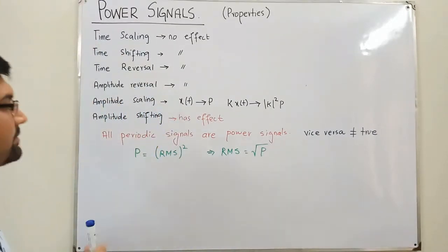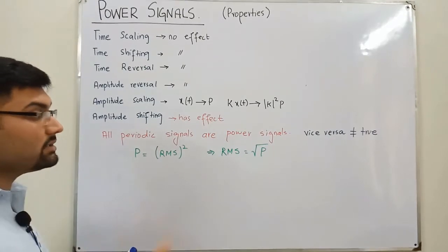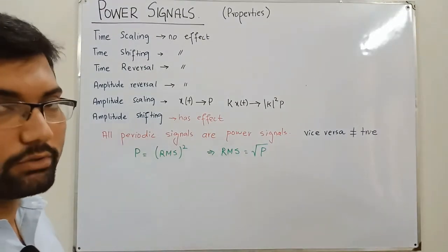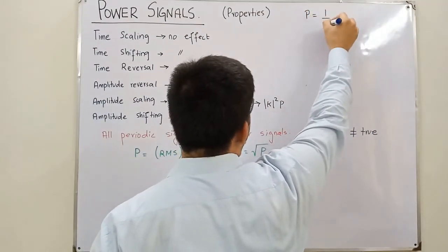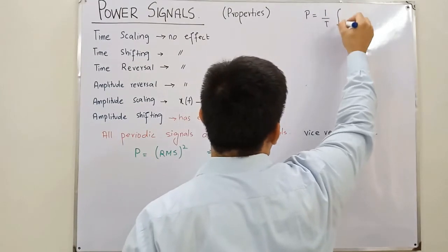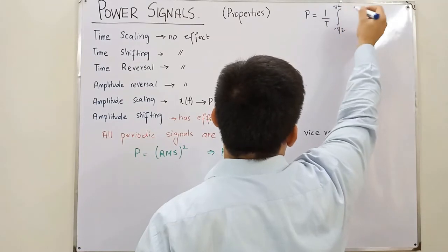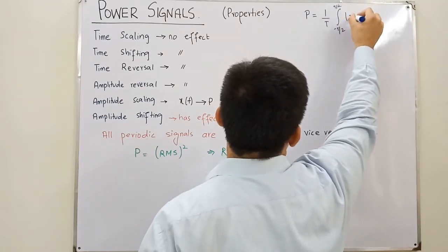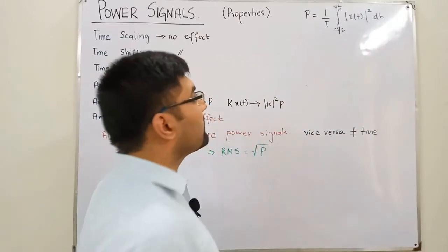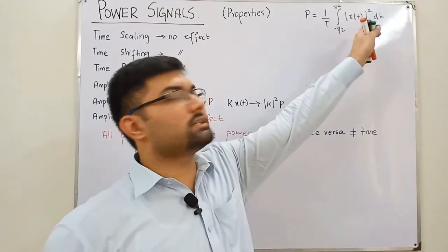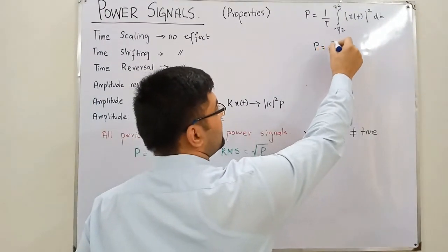Another simple property: the power is found by calculating through the absolute of the function. The formula is P = (1/T) times the integral from −T/2 to +T/2 of |x(t)|² dt. Without the 1/T factor, this is the energy of the signal, and since power is energy divided by time, this formula is absolutely correct.